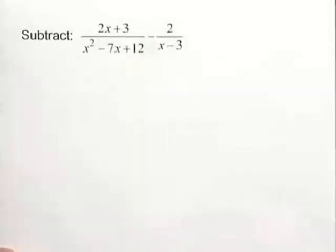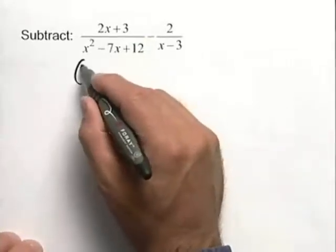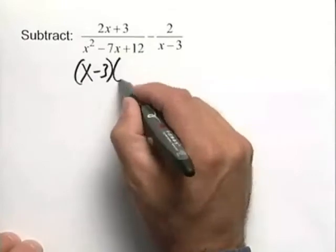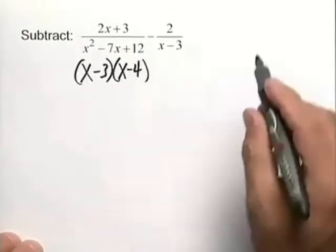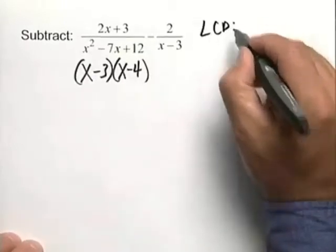Let's subtract two rational expressions. We have two rational expressions with unlike denominators, so let's factor the first denominator, x minus 3 and x minus 4. This will make it nicer for us to determine our LCD.